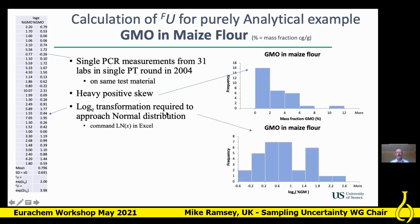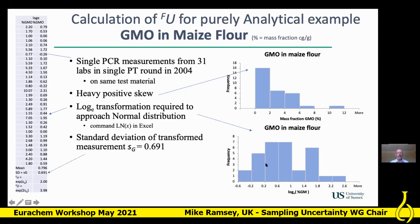To overcome this skew, you take the natural logarithms of each number — the command in Excel is LN(x). Calculating log to base e for each number and plotting a histogram shows it comes out much closer to being normal, which is good news. To calculate the uncertainty factor, we take the standard deviation of these log-transformed numbers: 0.69.